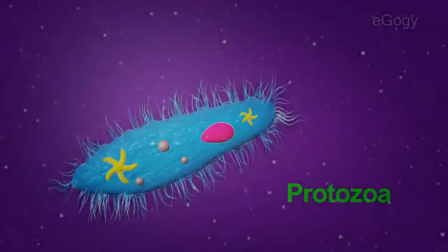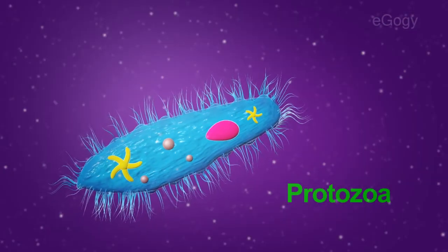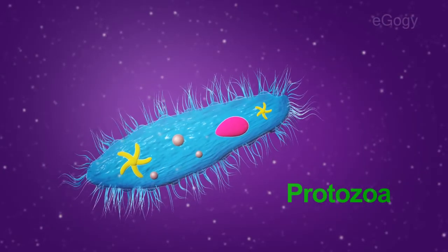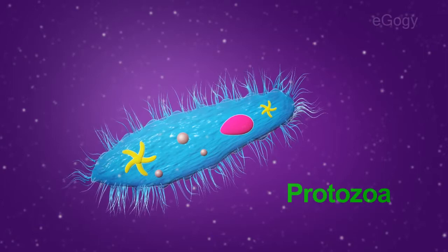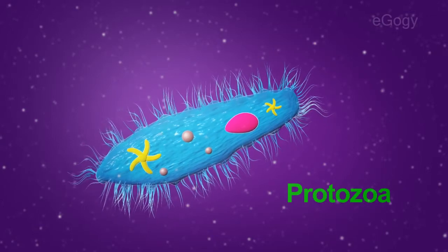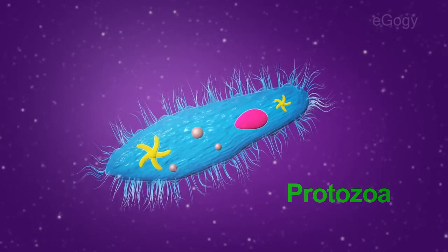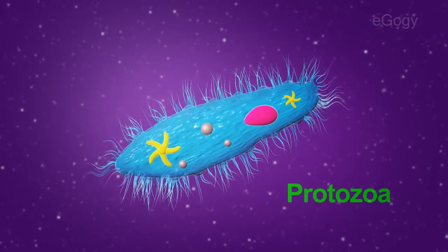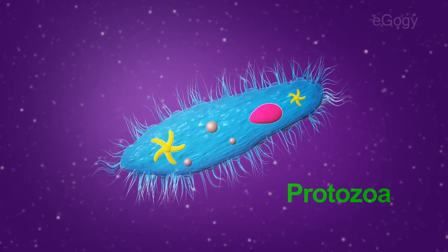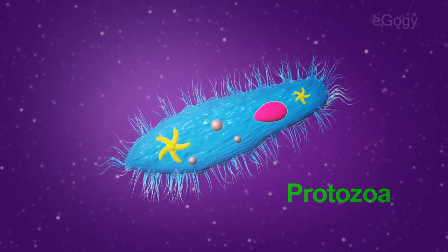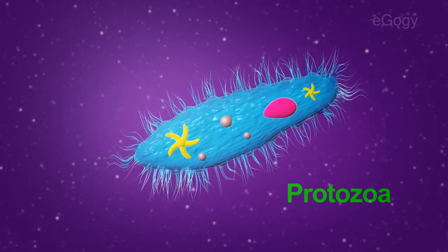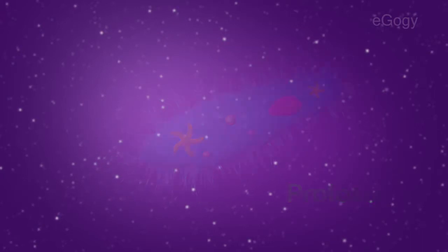The protozoans are unicellular organisms having a specific nucleus. They have different shapes. Their locomotion is aided by pseudopodia, flagella, or cilia.